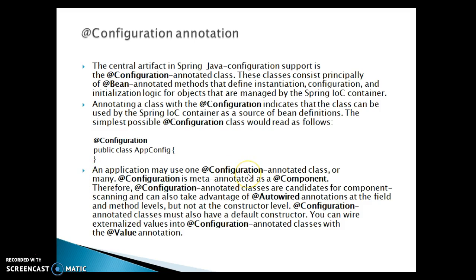An application may use one or many @Configuration-annotated classes. @Configuration is meta-annotated as a @Component, therefore @Configuration-annotated classes are candidates for component scanning and can also take advantage of @Autowired annotations at the field and method levels, but not at the constructor level. @Configuration-annotated classes must also have a default constructor. You can also wire externalized values into @Configuration-annotated classes with the help of the @Value annotation. So @Value, @Autowired, and @Component are annotations we had already covered in past videos, but we will use them in this tutorial as well.